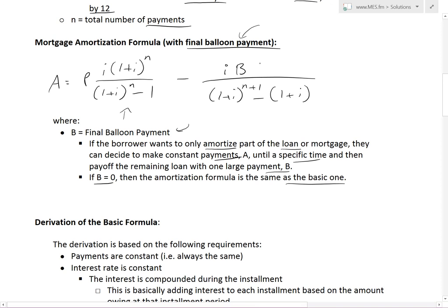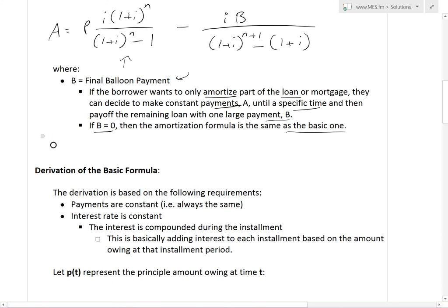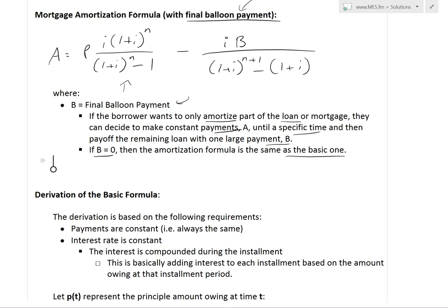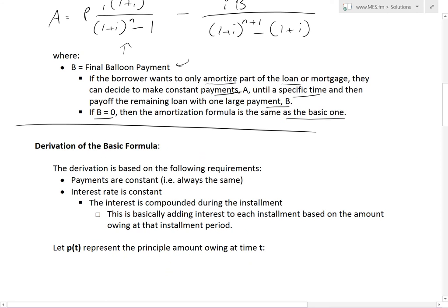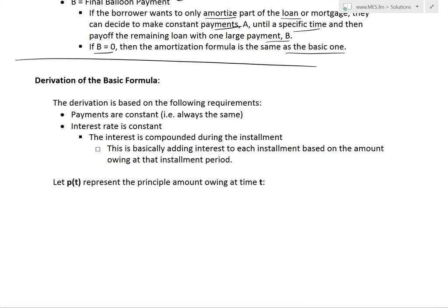For the derivation of the basic formula, we need to follow these requirements: payments are constant, the interest rate is constant, and interest is compounded during each installment. So every installment has that interest rate applied — if it's per month, you divide the annual interest rate by 12. This is the idea of adding interest to each installment based on the amount owing during that installment period — the concept of compound interest.